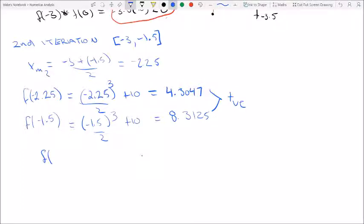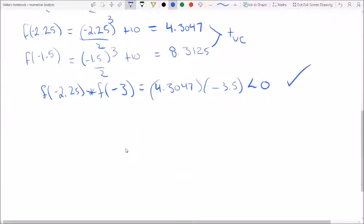And then we can show that our check works again for this iteration. So we have f(-2.25) times f(-3). Negative and a positive, so that is going to be less than zero. So that works.